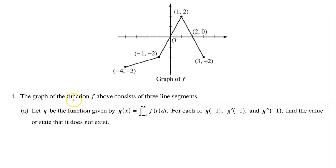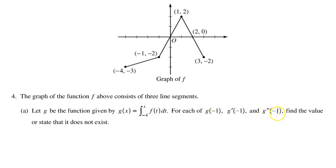The graph of function f consists of three line segments. Part A: Let g be the function given by g equals the integral from negative 4 to x of f at t dt. For each of g at negative 1, g prime at negative 1, and g double prime at negative 1, find the value or state that it does not exist.